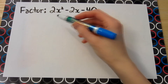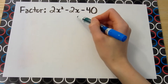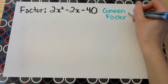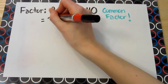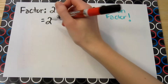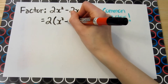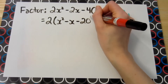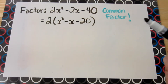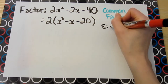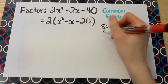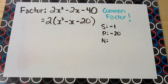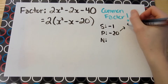In this next example, factoring 2x squared minus 2x minus 40, the first thing to realize is that there's a common factor — this has to be taken out first. So factor out the common factor of 2, leaving us with x squared minus x minus 20. Now at this stage, we can continue with the sum and product method. The sum is negative 1, the product is negative 20, and now we're looking for the two numbers. Let's start by listing factors of negative 20.